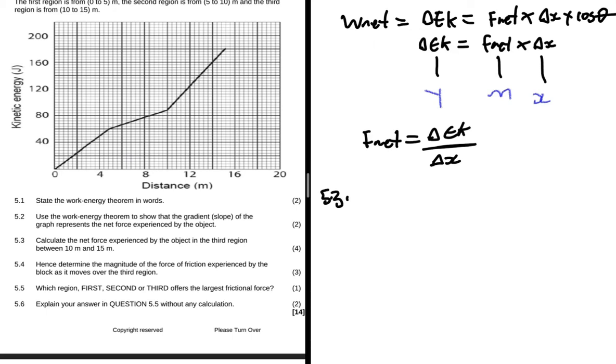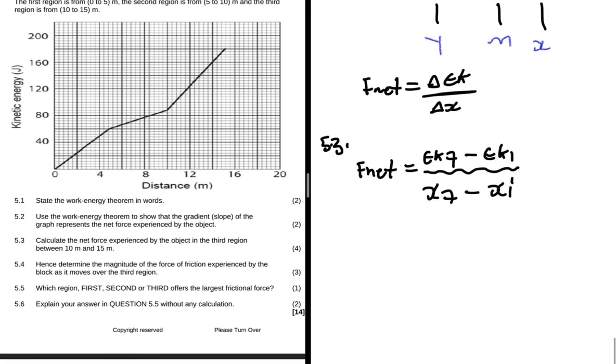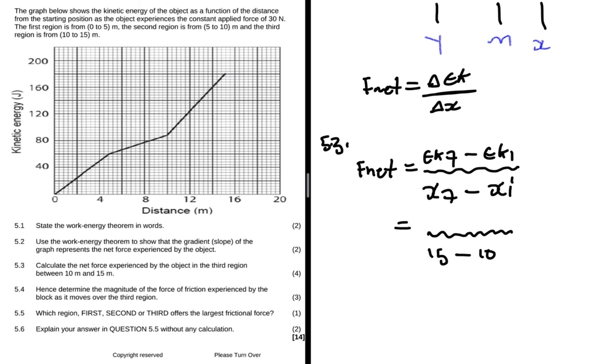Question 5.3 says calculate the net force experienced by the object in the third region between 10 meters and 15 meters. So F net, we know that we're supposed to find delta EK and delta x. So we have F net equals EK final minus EK initial divided by x final minus x initial. We want the net force experienced between the region 10 to 15, so for x final we're going to have 15 minus 10 because that's our initial. Now let's find the corresponding EK values.